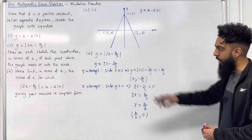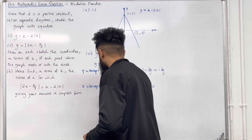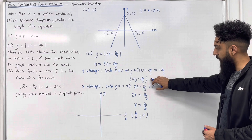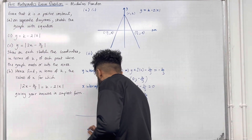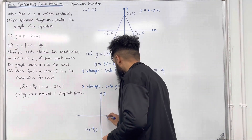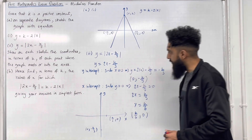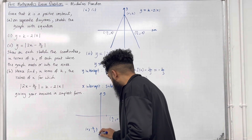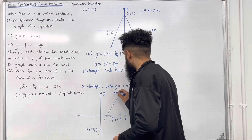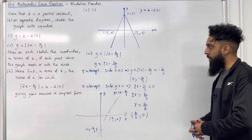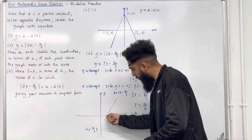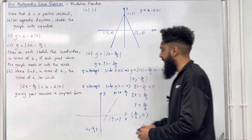Now I'll sketch y = 2x − k/3. The y-intercept is (0, −k/3) and the x-intercept is (k/6, 0). The gradient is 2, which is positive, so we have a positive gradient and a straight line. To get the modulus graph, I need to reflect everything below the x-axis upward, in the x-axis.